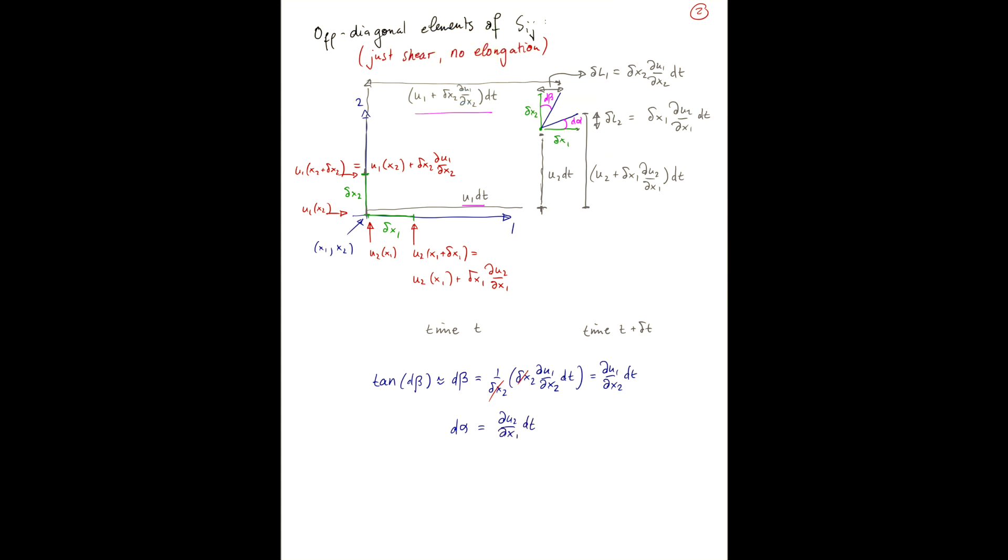So the average rate that the two perpendicular line elements rotate towards each other is given by a half d by dt times alpha plus beta, which in the limit of small t, when t goes to 0, this becomes a half 1 over dt d alpha plus d beta. And so if we now plug in these expressions for d alpha and d beta,